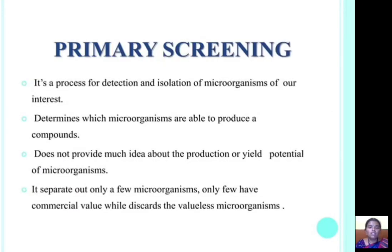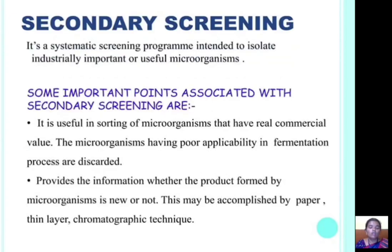Primary screening is the process for detection and isolation of microorganisms of our interest. It determines which microorganisms are able to produce the desired compounds, but does not provide much information about the production or yield potential. It separates out only a few microorganisms of commercial value and discards the valueless ones.